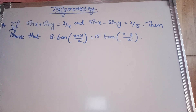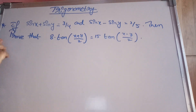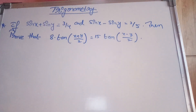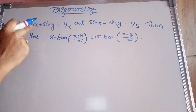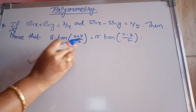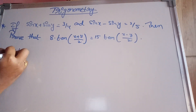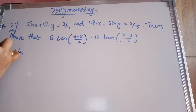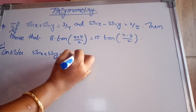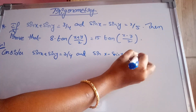Next problem: If sin x plus sin y equals 3/4 and sin x minus sin y equals 2/5, then prove that 8 tan((x+y)/2) equals 15 tan((x−y)/2). The given values are sin x plus sin y equals 3/4, call this equation 1, and sin x minus sin y equals 2/5, call this equation 2.